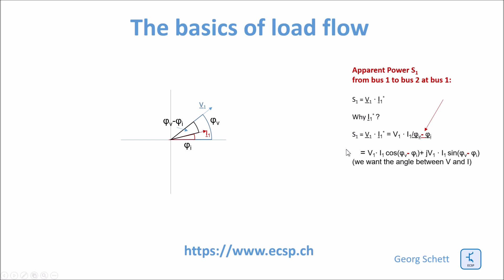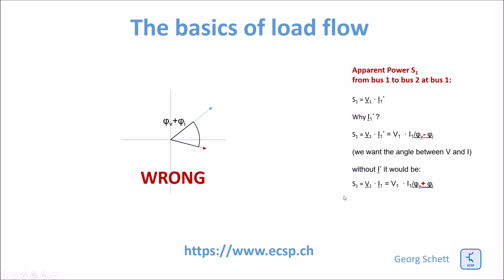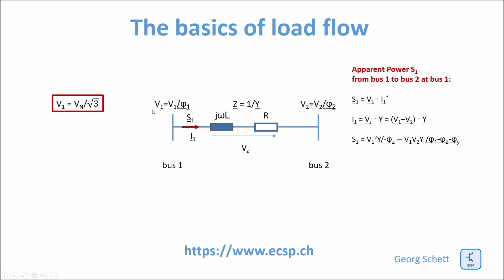The apparent power therefore consists of a real power plus j times the reactive power, and here you see the minus sign which is due to the difference between the two phasor angles. Without conjugate complex current we would add the two angles instead of subtracting, and this would lead to a completely different apparent power. This voltage V1, since we are talking about phase to ground system, is the nominal voltage divided by square root of 3.